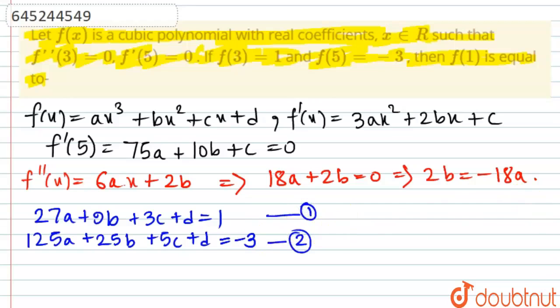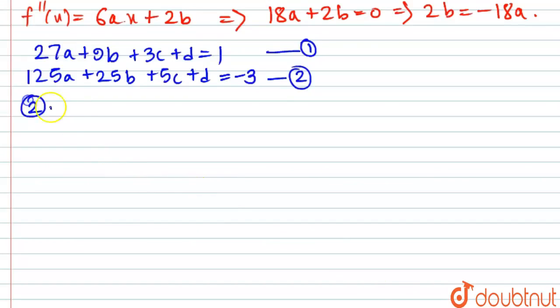Now what we need to do is just subtract 1 from 2, that is 2 minus 1 would be giving us 49a plus 8b plus c = -2. Actually this is after cancelling because 125 minus 27 is 98a, and then 2 is to be cancelled from both sides, so this is the equation which would be remaining.